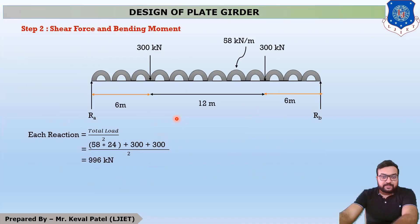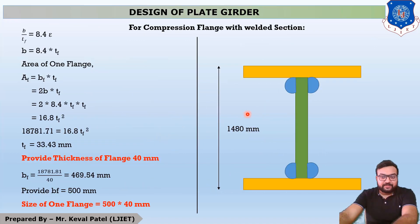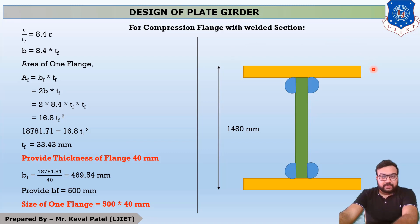Our selected section has the following dimensions: width of flange is 500 mm, thickness of flange is 40 mm, optimum depth of section is 1400 mm, thickness of web portion is 12 mm, and flange portion area is 500 × 40 mm.